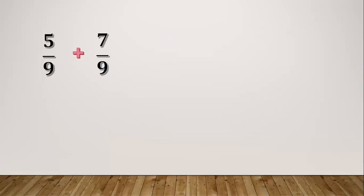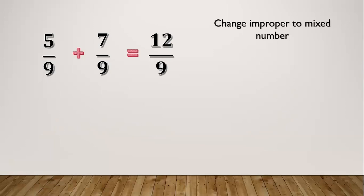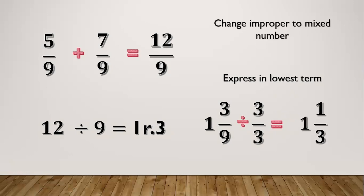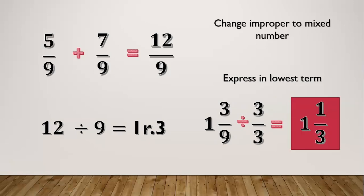Another example: five ninths plus seven ninths. Five plus seven equals twelve. Copy the denominator which is nine, giving twelve ninths. Change the improper fraction to a mixed number. Twelve divided by nine equals one remainder three. Three is our numerator and one is our whole number. Copy the denominator which is nine, giving one and three ninths. Express in lowest terms — since three and nine have a common factor of three: three divided by three equals one and nine divided by three equals three. So our final answer is one and one third.